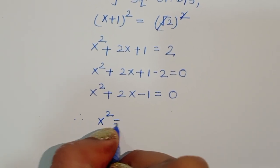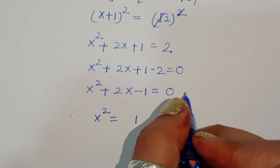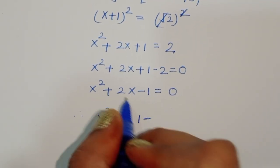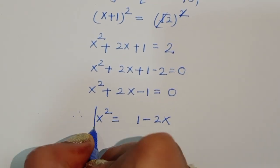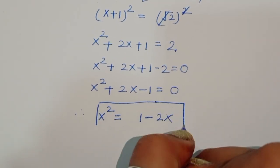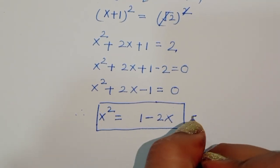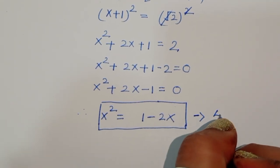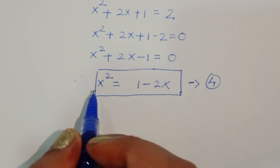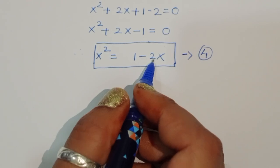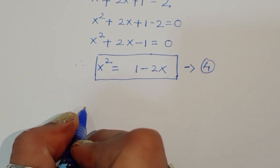Therefore x squared is equal to 1 minus 2x. This is the value of x squared, and this is equation number 4. Now we have to take a square of this equation again.